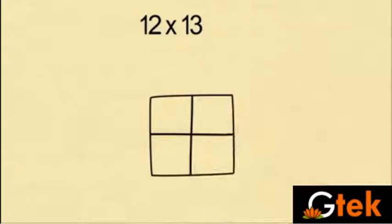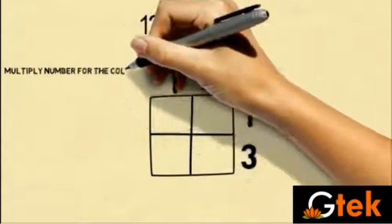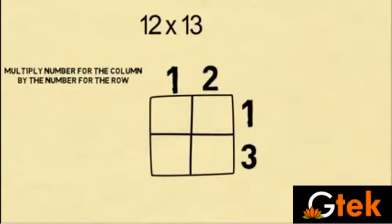My equation is 12 into 13. So I am putting 1 square and segregating it into 4 parts. So I am writing the equation 1, 2, 1, 3 in such a way. I have demonstrated.